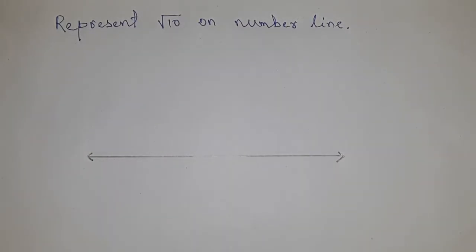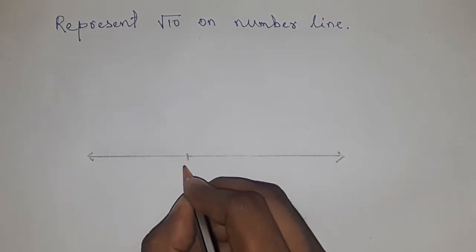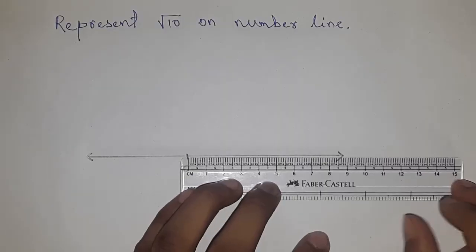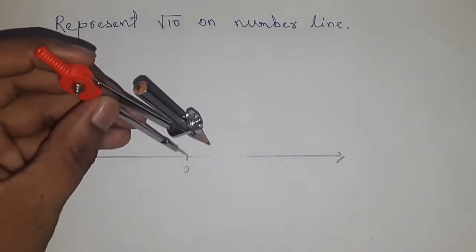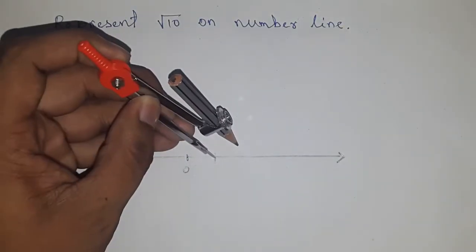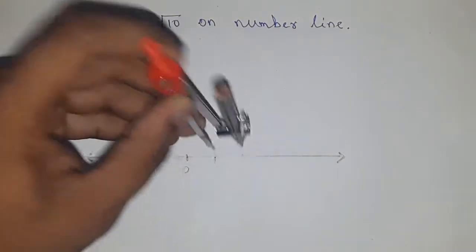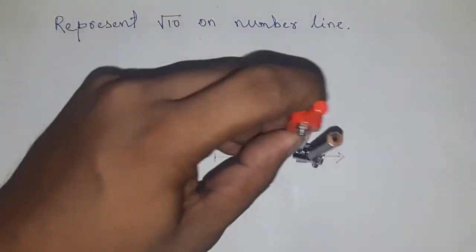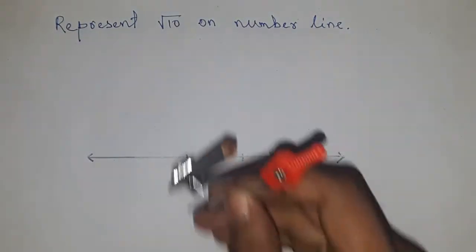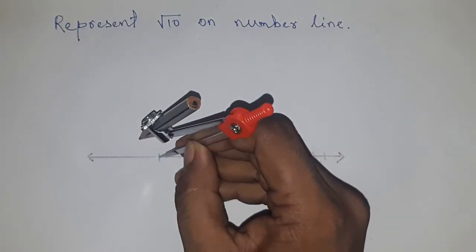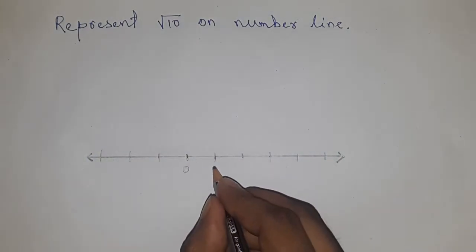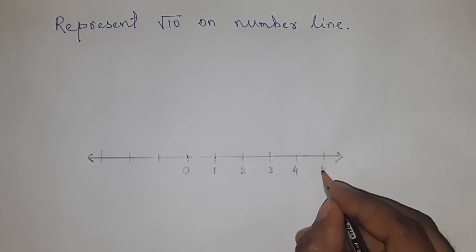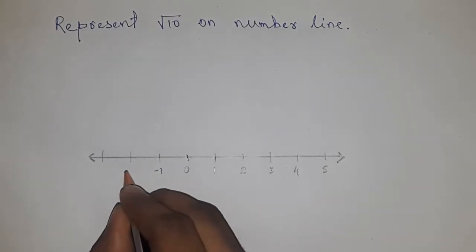First of all, drawing a line here and marking the end by an arrow to represent the number line. Now marking the numbers — we can use a scale or a pencil compass. Better we use the compass here and cut the line. So this is one, two, three, four, and five, and on this side minus one, minus two, and minus three.